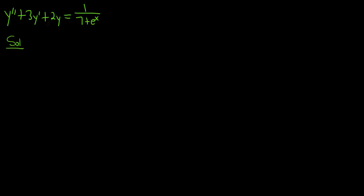The first step in the method of variation of parameters is to pretend that this is equal to 0 and solve it. To solve this when it's equal to 0, we start by writing down the characteristic equation. We match the power to the derivative: there's a second derivative, so this is m squared, plus a first derivative, so it's m. And then for the 2y, we simply put a 2. This is equal to 0.